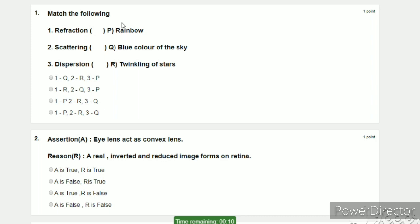First question: Match the following. Refraction, Scattering, Dispersion. This side: rainbow, blue colour of sky, twinkling of stars. Here we have Refraction and the phenomenon is twinkling of stars. Next, Scattering - blue colour of sky. Dispersion - rainbow. So here we have the order: R, Q, P. This is the second option. So this is the answer.